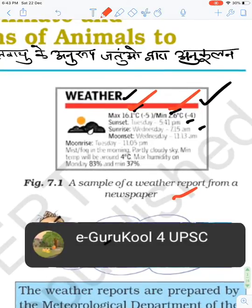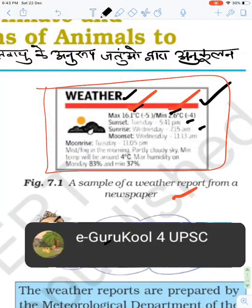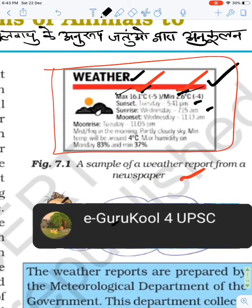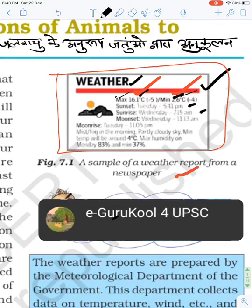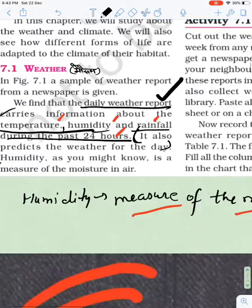You may have seen a picture like this in your newspaper. This type of picture shows the maximum and minimum temperature of a particular city for a particular day.